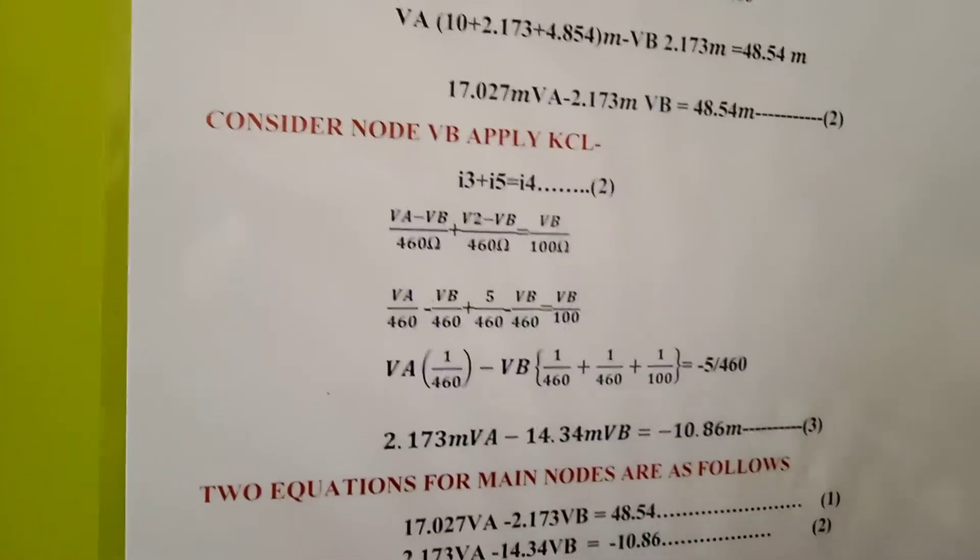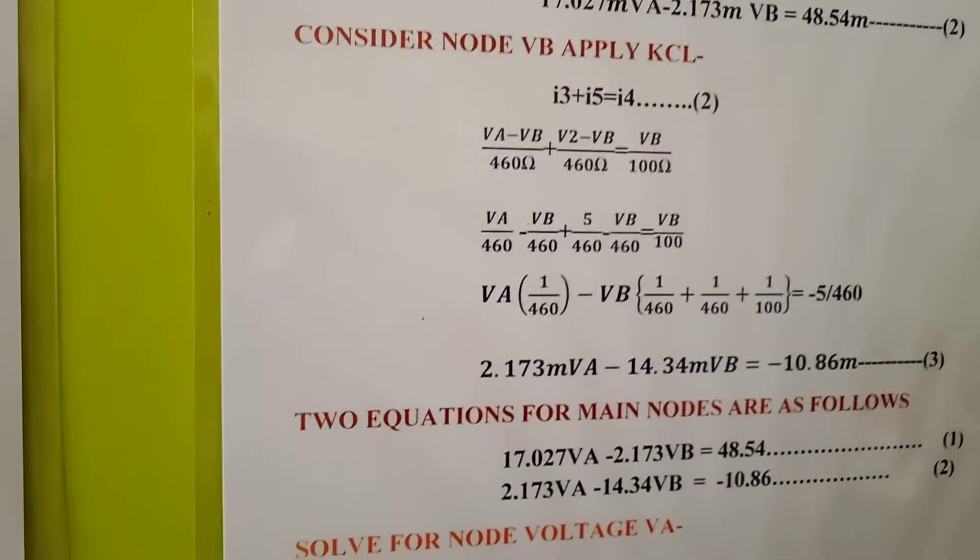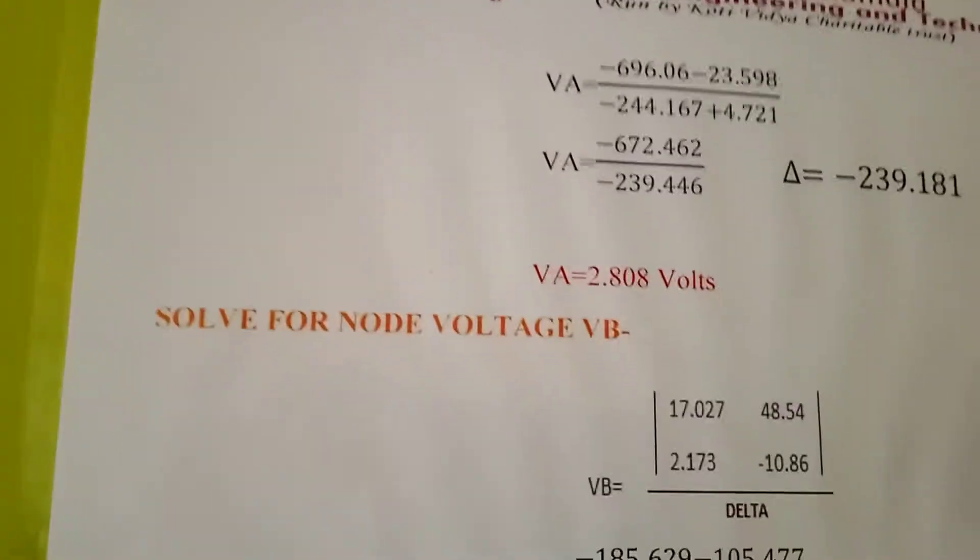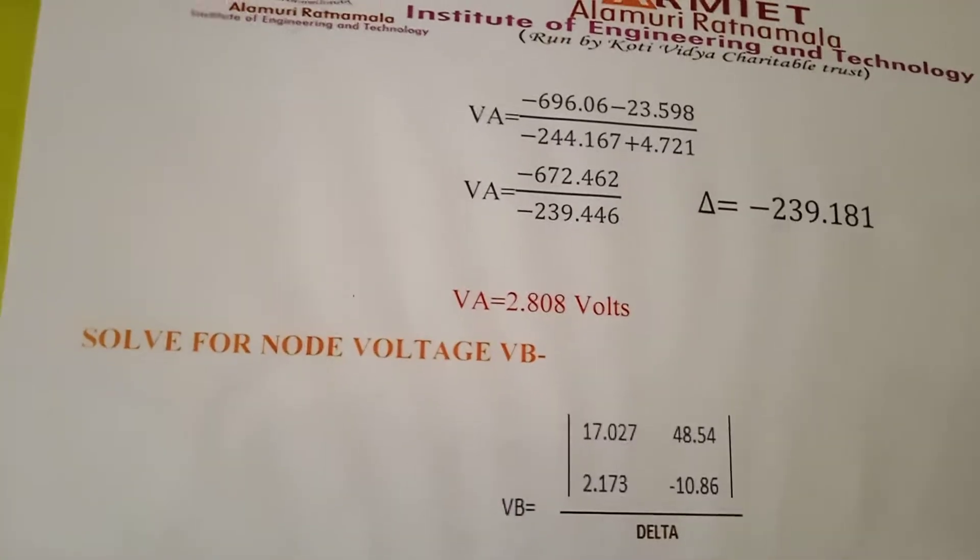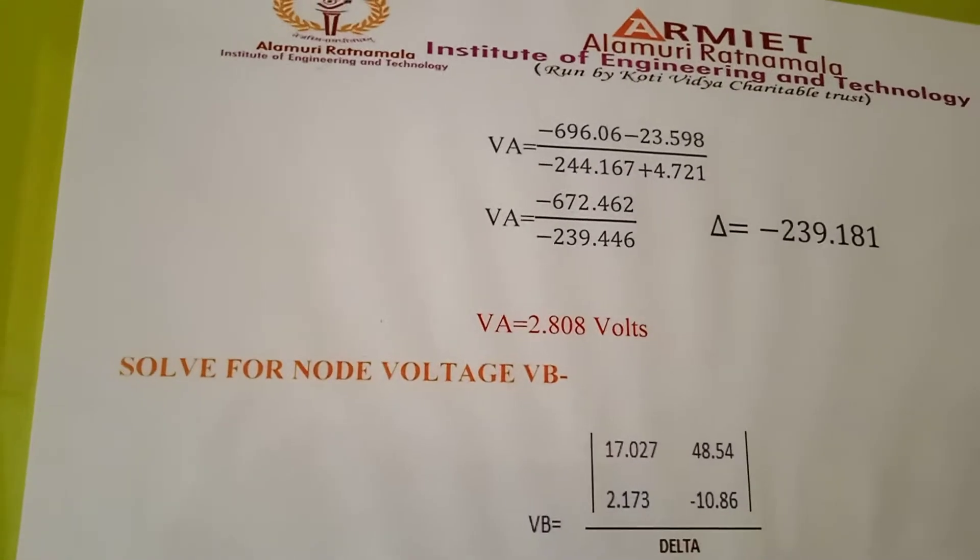So these are the theoretical values of VA. These are the theoretical calculations of VA and VB. These are the solving methods, and from solving equations we will get the values of VA and VB.